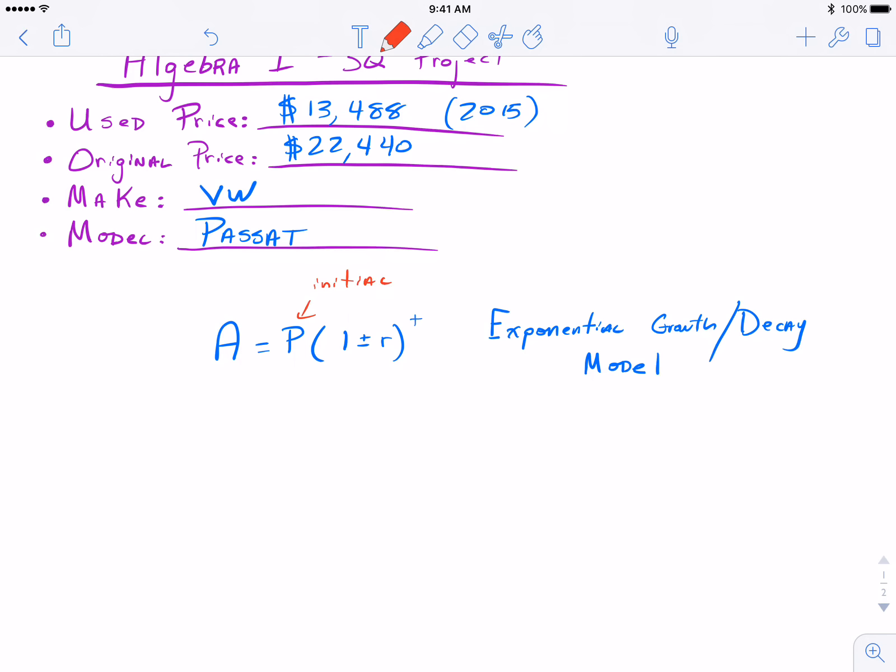To do that we're going to be using the exponential growth or decay model: A = P(1+r)^t. We have our principal, that's our starting initial rate, so obviously that's going to be our original price of $22,000. The A on the left basically is the end result, so that's going to be our used price: $13,488. That's what we're trying to figure out, what percent was kind of cut away from that original amount. Obviously we're going to be using 1 minus r here, this is decay, and the time here is two years.